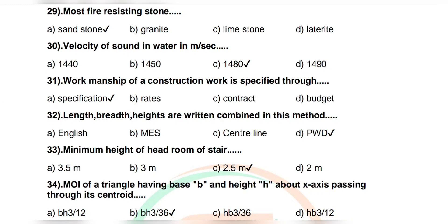Question 31: Workmanship of a construction work is specified through — options: specification, rates, contract, budget. Correct answer: specification. Question 32: Length, breadth, height written combined in which method — options: English, MES, center line, PWD. Correct answer: PWD. Question 33: Minimum height of headroom of stair — correct answer: 2.5 meters.